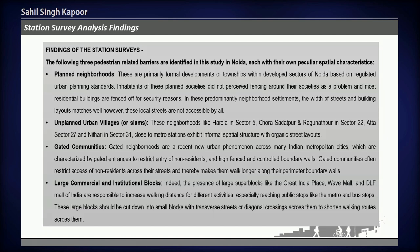The first type of barrier is planned neighborhoods. The emergence of private townships and gated communities is quite recent in the Indian scenario. However, they do not offer accessibility for all, as there are security checkpoints and non-residents are not allowed to cut across through these gated communities. There are several gated communities present within walkable distance of metro stations in Noida, and people are forced to walk along their boundaries.